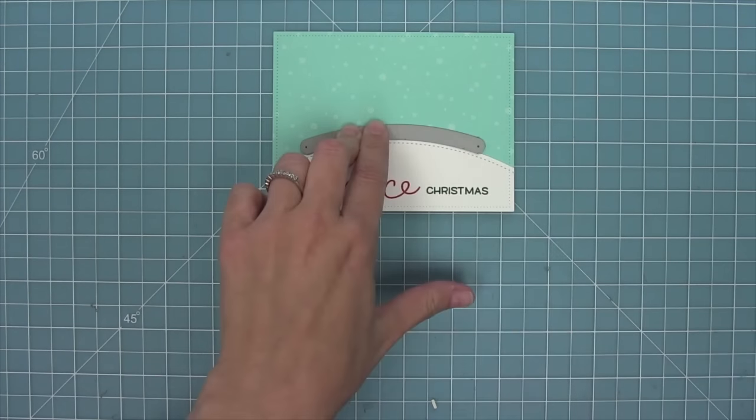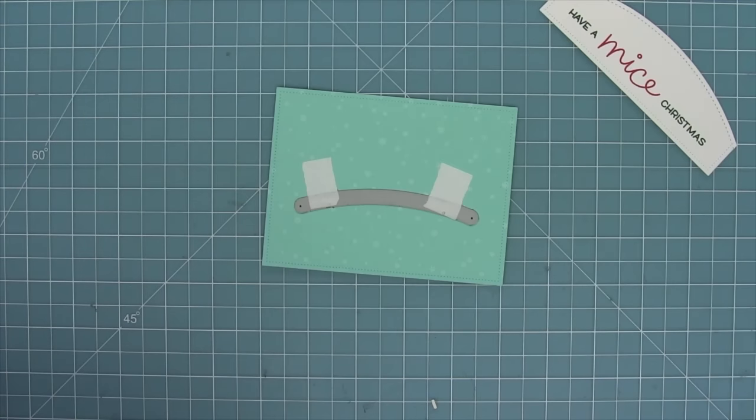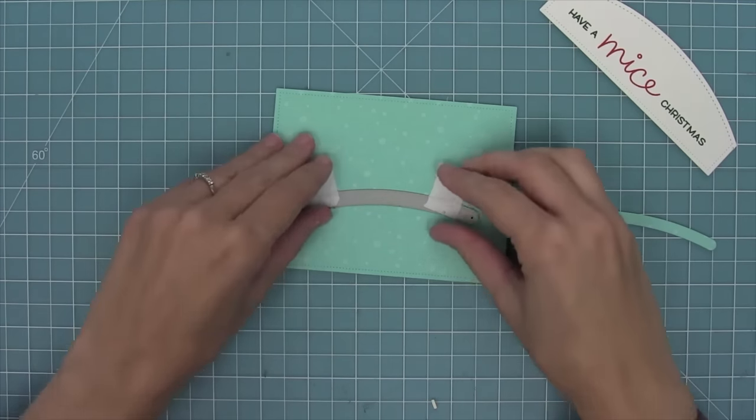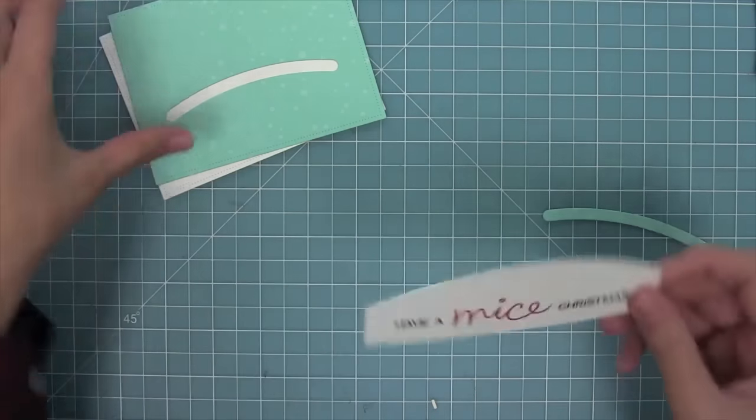Now I'm going to use that hill as a guide as to where to put my slide on over slider die. Once I have that in place I'm going to hold it with some low tack tape, run it through my die cut machine, and you'll see that I'm going to save the little portion that it cut out and I'll show you how I'm going to use that in a second.